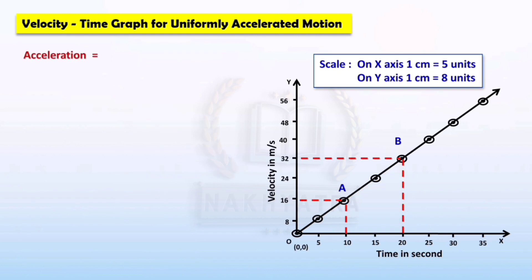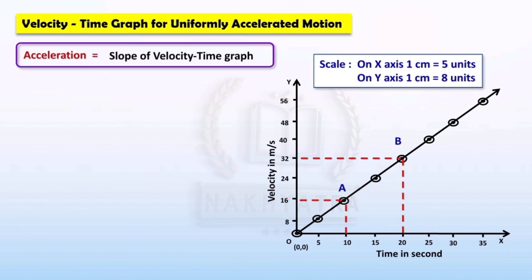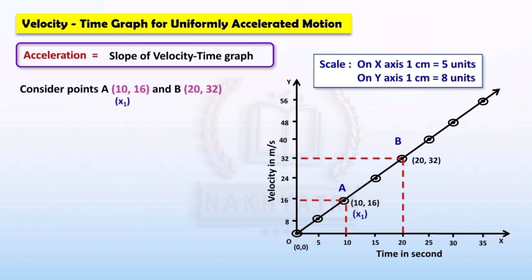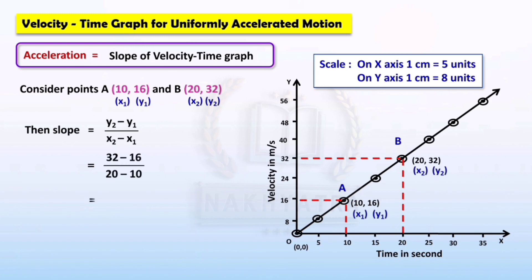Now we find the acceleration. Acceleration equals the slope of the velocity-time graph. Consider points A and B where x₁ = 10, y₁ = 16, x₂ = 20, and y₂ = 32. Slope = (y₂ − y₁) / (x₂ − x₁). Putting in the values and calculating, we get 1.6 meters per second squared. So acceleration = 1.6 m/s².